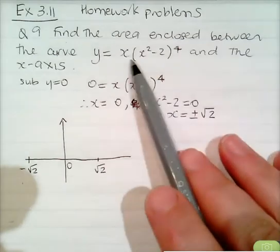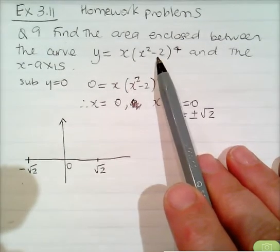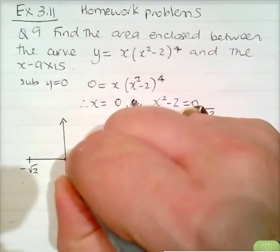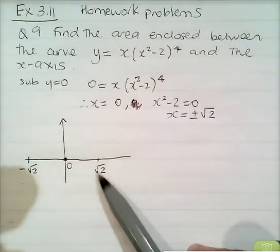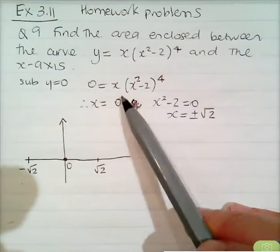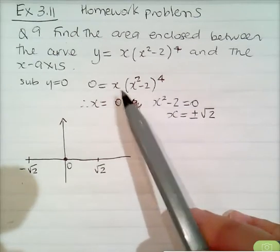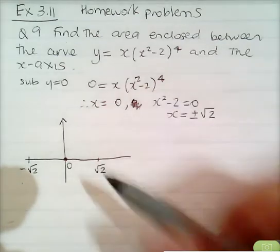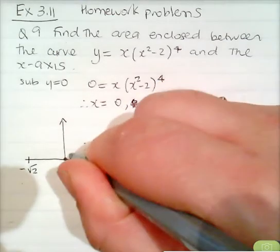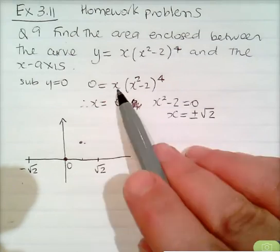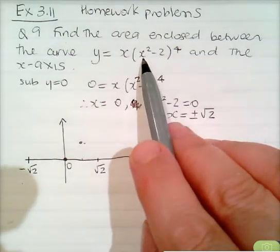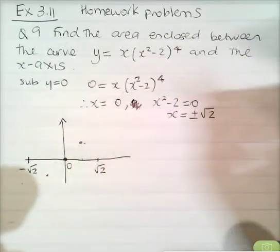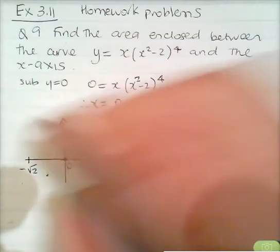To get an idea of the shape, we can substitute some values. When x is 0, y is also 0. When x is 1: 1 minus 2 is negative 1 to the power 4 is 1, times 1 is 1 — so y equals 1. When x is negative 1: we get negative 1 times 1 which gives y equals negative 1.